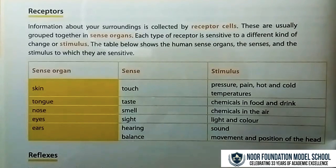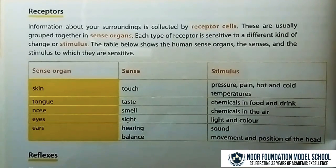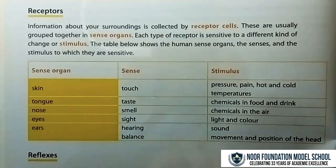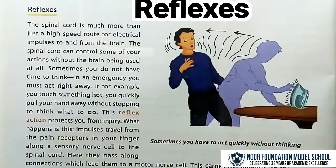The eyes are the sense organ for sight, with stimulus being light and color. The ears are the sense organs for hearing and balance, with stimulus being sound and movement.